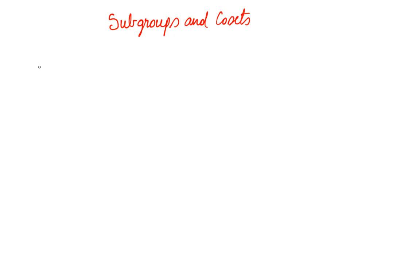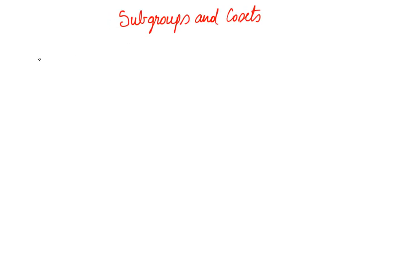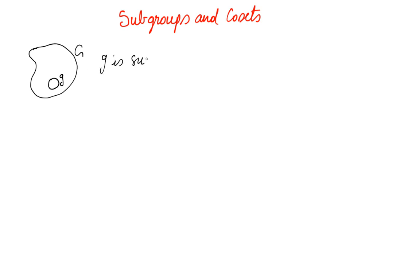Let's talk about a few more definitions before we proceed because they'll be useful in future. If we have a group capital G which has some elements, some of those elements belong to a small group g. Elements belonging to small g satisfy the four conditions of being a group. So G is the main group and small g is called the subgroup.